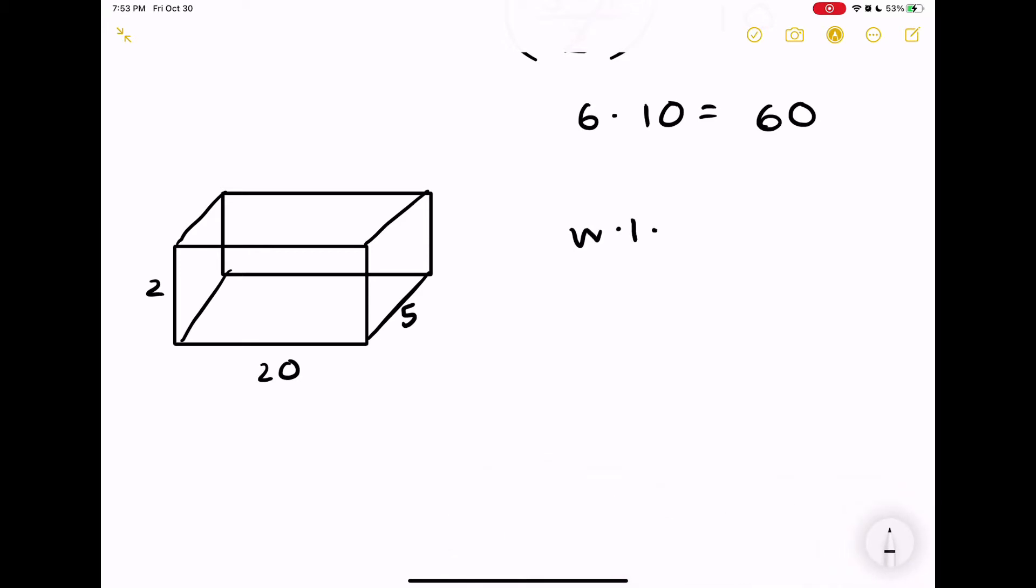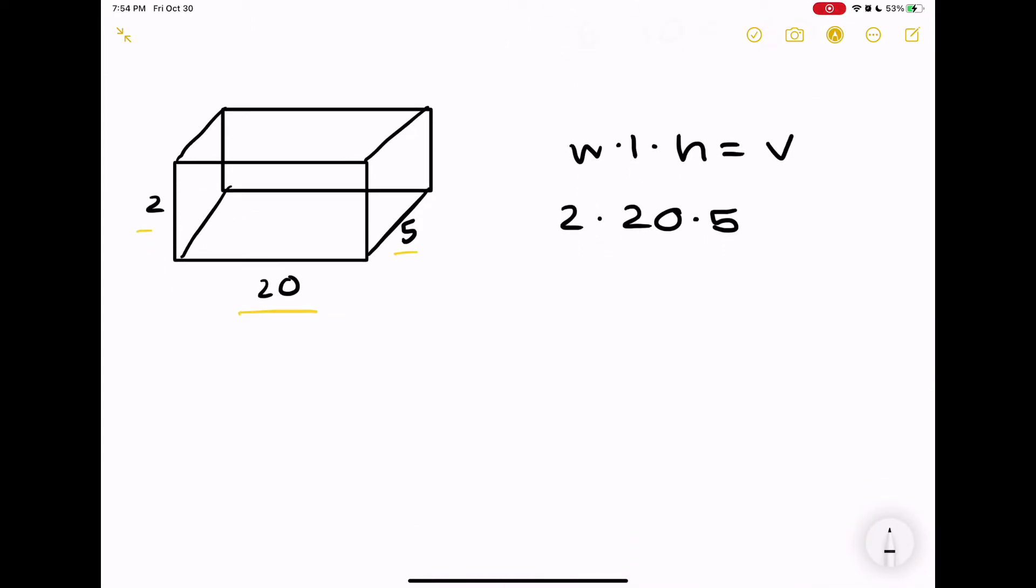Let's say we have 2, 20, and 5. We know in this case the height is 5. You just need to fill everything in and identify the differences between the heights, the lengths, and the widths. For this equation you should get 200.